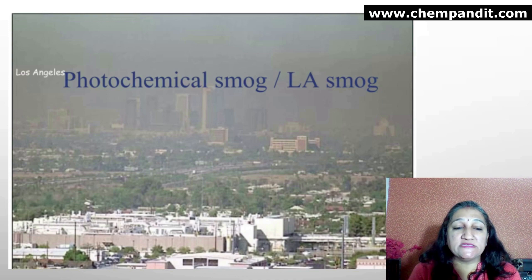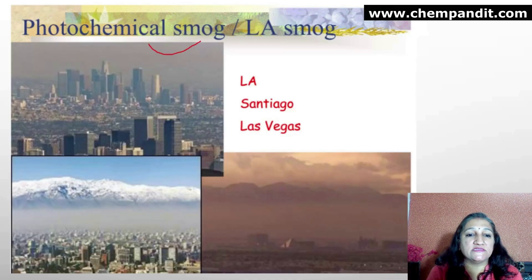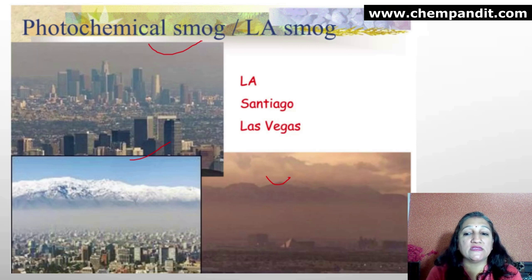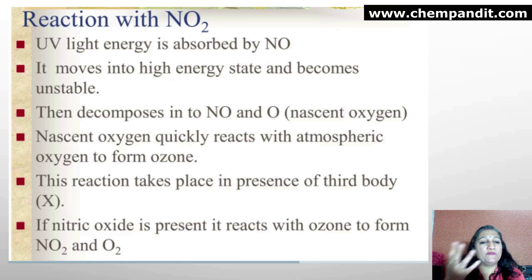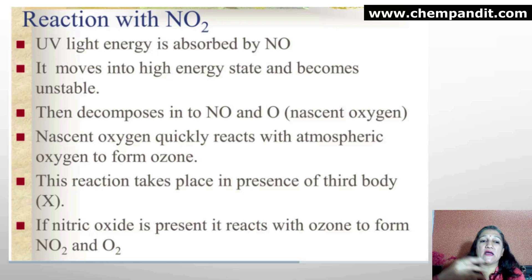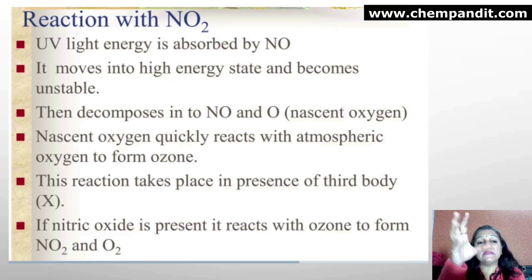Examples of photochemical smog are seen in Los Angeles, Santiago, Las Vegas, and London. In India, Delhi and Punjab are notable examples. In Haryana and Punjab, after harvest the remaining crop residue is burned. This burning produces a huge amount of primary pollutants, and when burned without nitrogen-free conditions, it creates smoke. This agricultural burning practice should be stopped.